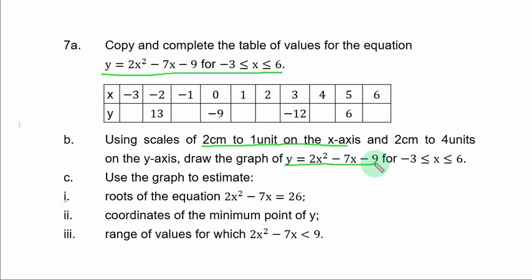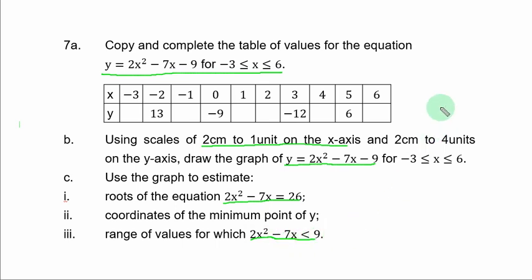Part c: use the graph to estimate. Roman numeral 1, roots of the equation 2s² - 7s = 26. Roman numeral 2, coordinates of the minimum point of y. Roman numeral 3, range of values for which 2s² - 7s is less than 9.